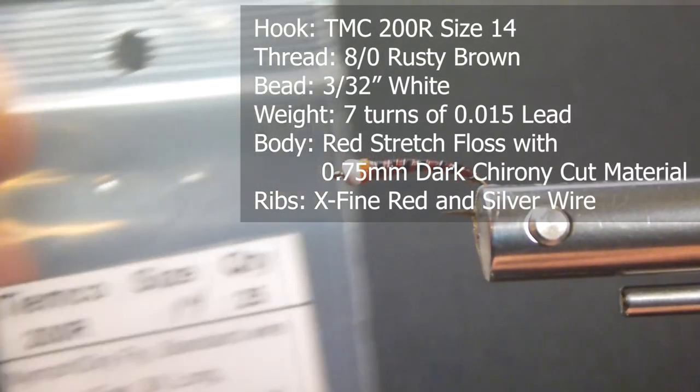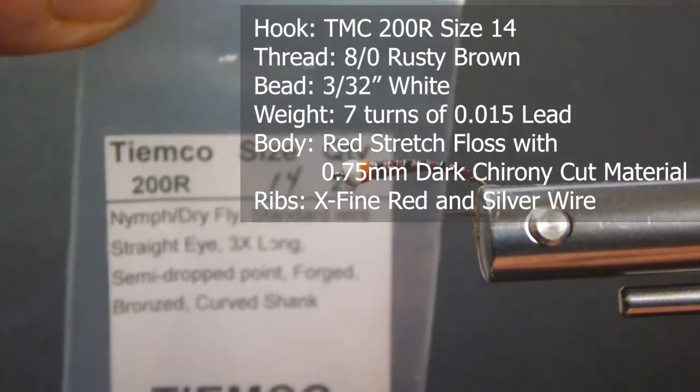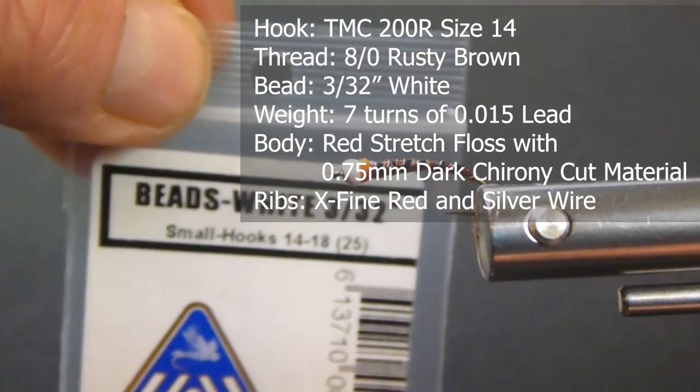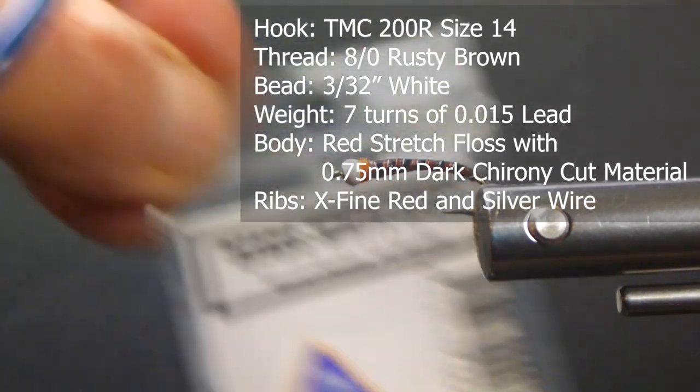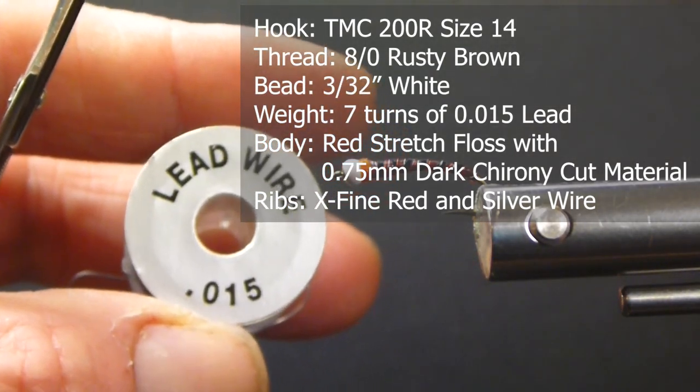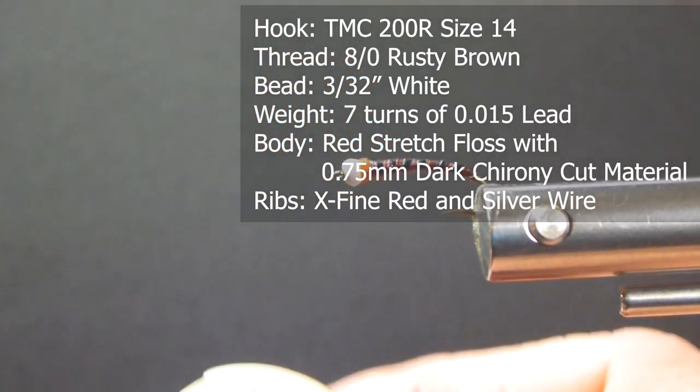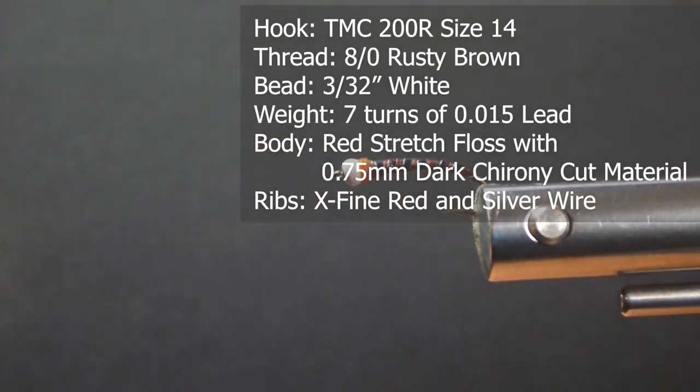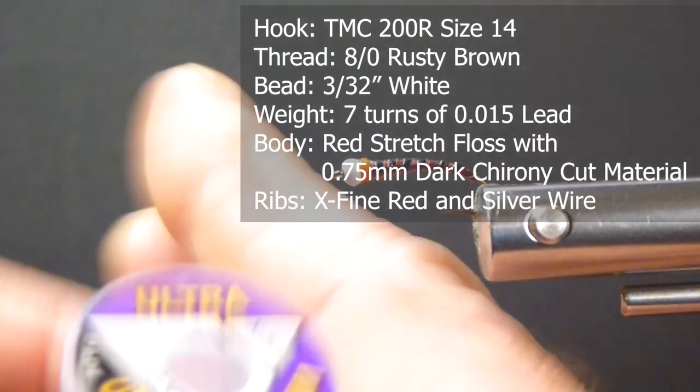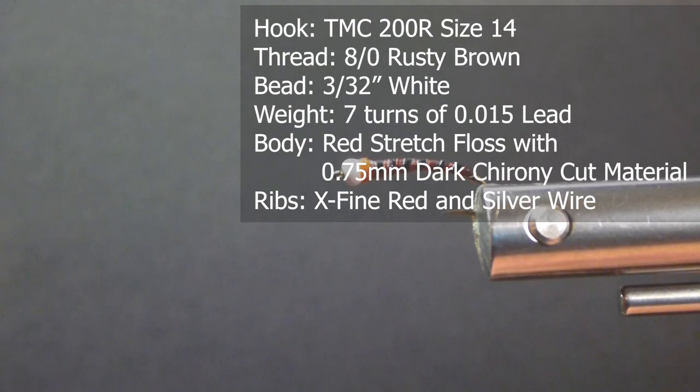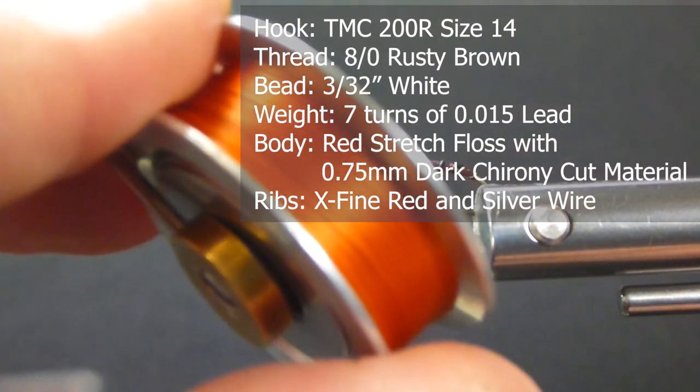To start this fly we're going to use a Tiemco 200R size 14. I'm going to use a white 3/32nd bead on the front. And behind the bead I'm going to use some 15 thou lead wire. And also for the ribbing we're going to use some extra fine red soft wire. You can use extra small silver wire. We're going to have a double rib on here. It's a great idea that someone's come out with those double ribs. It really gives a nice accent.